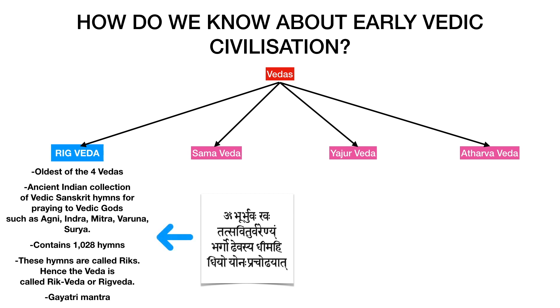The other three parts of the Vedas — Sam Veda, Yajur Veda, and Atharva Veda — will be discussed in this lecture in the coming slides. Now that we have seen the sources of early Vedic civilization, let us look at its features. In this video we will discuss six important features of the early Vedic civilization.